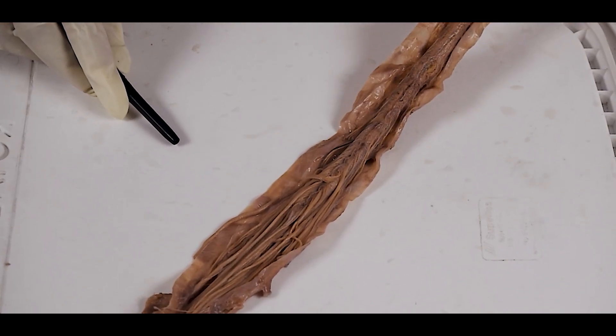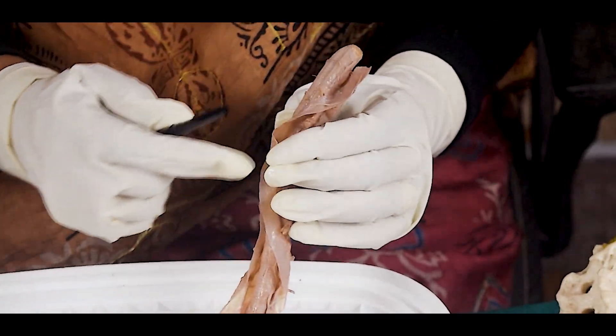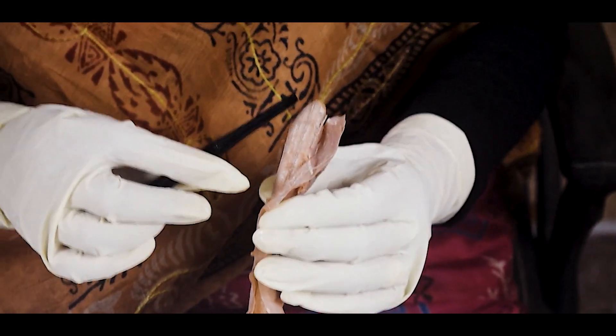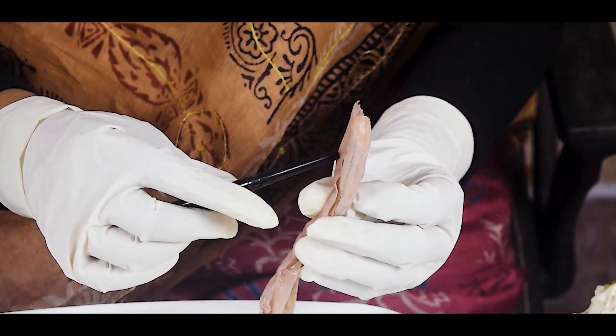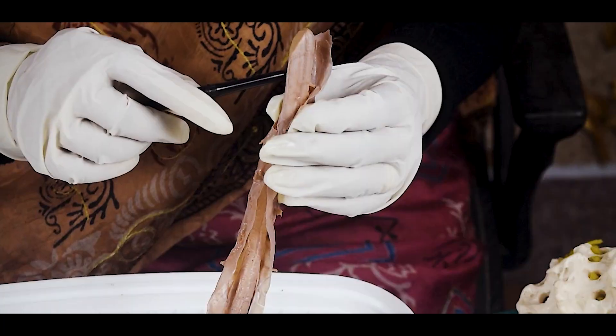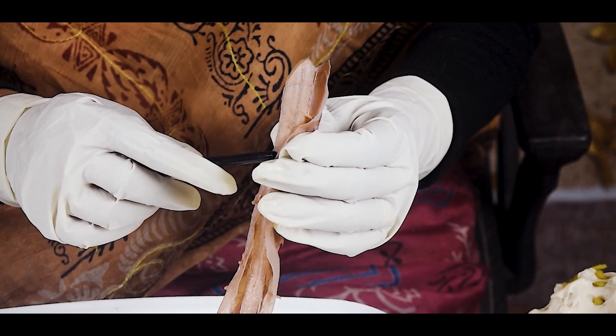Another thing is that the arterial supply of the spinal cord—it is extensive because it is supplied anteriorly by the anterior spinal artery, posteriorly by the posterior spinal artery, and in each segment.